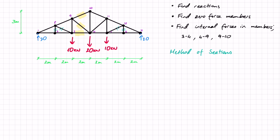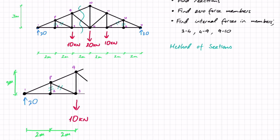For the method of sections, we can only cut through three non-zero members. Since all target members are close together, we'll make a cut here. We'll look at the left-hand side since it has fewer forces. The cut exposes N9-10, N4-9, and N3-4. I'll assume all of these are in tension — anything positive will be tension, anything negative will be compression.